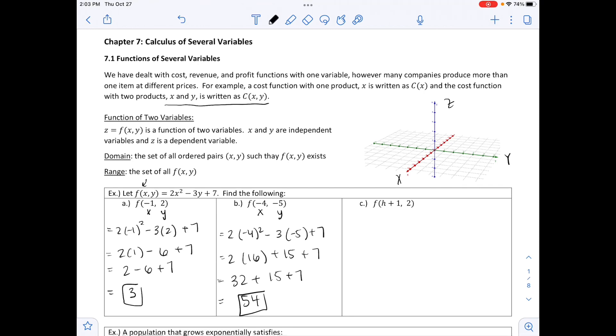The last one that we have is F of H plus 1 comma 2. So Y is just equal to 2, but this expression H plus 1 is equal to X. So we're going to have 2 times X squared. And instead of X, we have H plus 1 minus 3 times Y, which is 2, plus 7. And so now multiplying this out, we have H squared plus 2H plus 1 minus 6 plus 7. From here, we can distribute that 2. And we have 2H squared plus 4H plus 2 minus 6 plus 7. And so combining our like terms, we have 2H squared plus 4H. And then we have 2 minus 6 plus 7, which would mean positive 3.